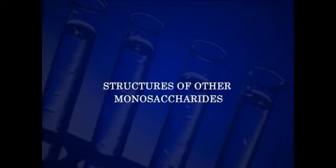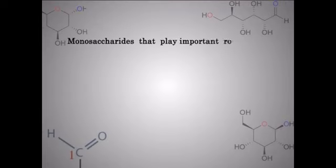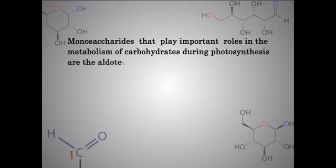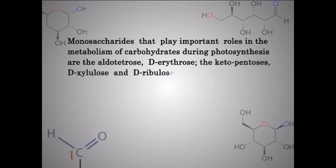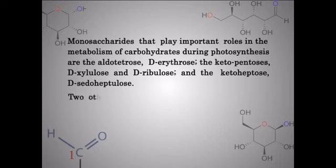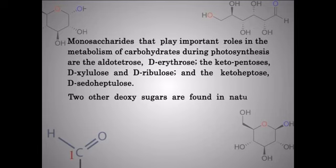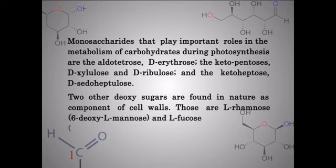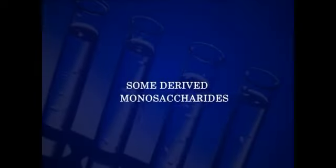Structure of other monosaccharides. Monosaccharides play important roles in the metabolism of carbohydrates. During photosynthesis, important monosaccharides include the aldotetrose erythrose, the ketopentoses xylulose and ribulose, and the ketoheptose sedoheptulose. Two other deoxy sugars are found in nature as components of cell walls: L-rhamnose, that is 6-deoxy-L-mannose, and L-fucose, that is 6-deoxy-L-galactose.